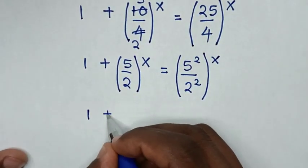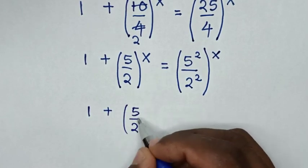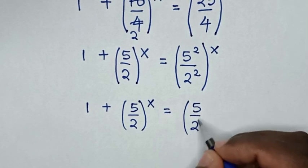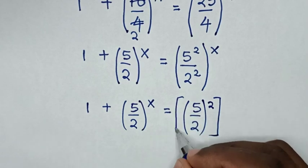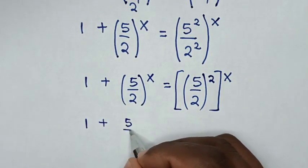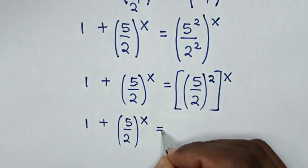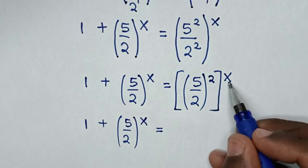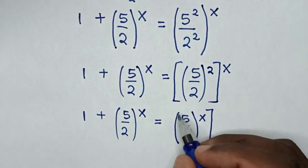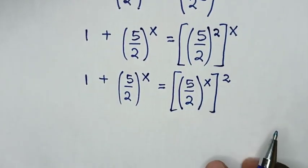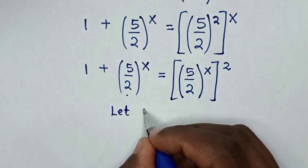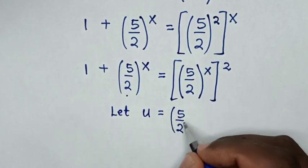Our equation will be (5 over 2) bracket power of x is equal to — here the power of 2 is common — so it will be (5 over 2) bracket power of 2, then bracket power of x. So it will be (5 over 2) power of x equals (5 over 2) power of x, bracket power of 2, exchanging the power of x inside and the power of 2 outside. In here (5 over 2) bracket power of x is common, so we let u equal to (5 over 2) bracket power of x.